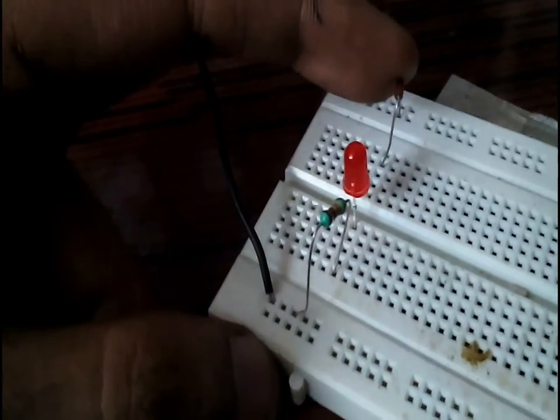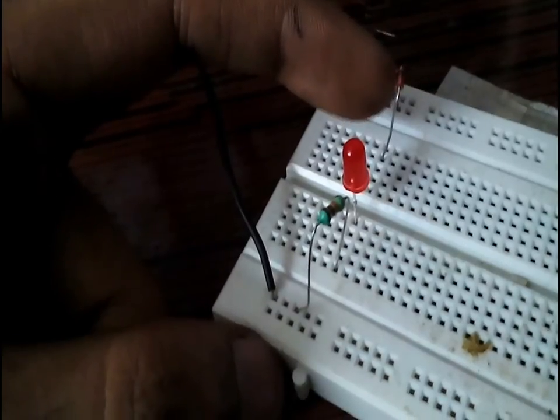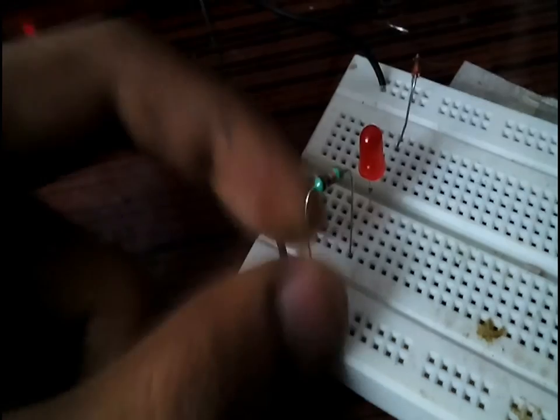I have connected an 8.2 volts Zener diode with a red LED and a 12 kilo ohms resistor. The LED should light up once the voltage crosses 8.2 volts plus 1.7 volts, that will be around 10 volts.